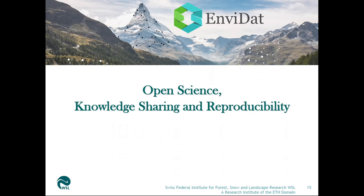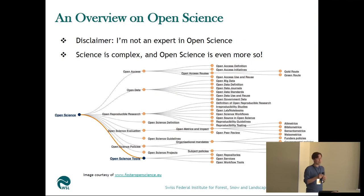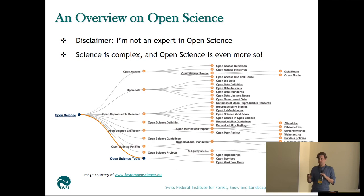Now let's go to the open science part. Open science, knowledge sharing, and reproducibility are very much interrelated. If you are waiting for a talk on open science — sorry, I can't do that; I'm not an expert. Science is complex, and open science is even more so. This is one of the taxonomies — there are many things to consider: open access, open data, reproducibility — even the definition is not clear, there are different definitions — evaluation, policies, tools, repositories, and so on. If you want to describe open science, I think you need a conference only about open science.